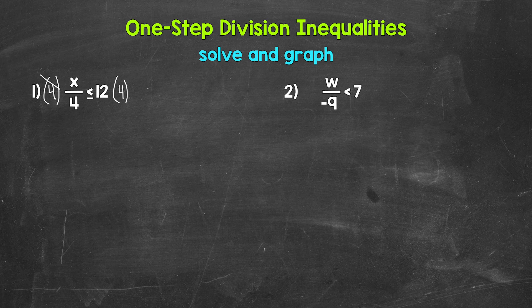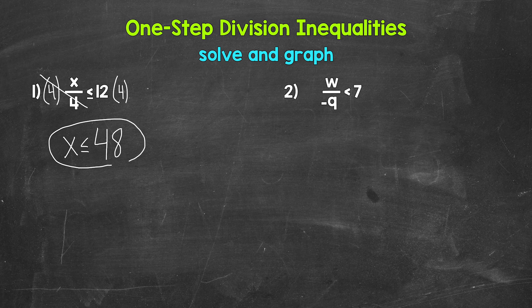So multiply the right side by 4 as well. Now on the left, these 4s cancel each other out. x is now isolated, so we have x is less than or equal to, and then on the right side, 12 times 4 gives us 48. So x is less than or equal to 48. That's our answer.